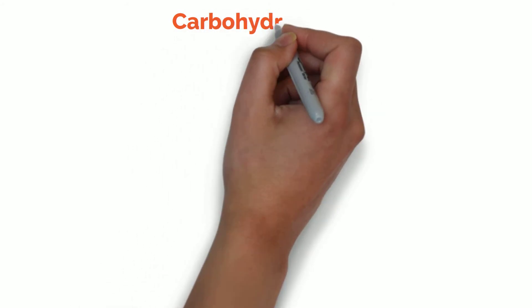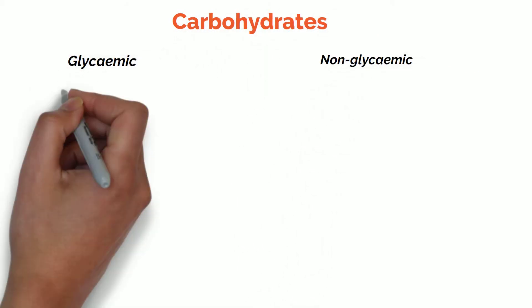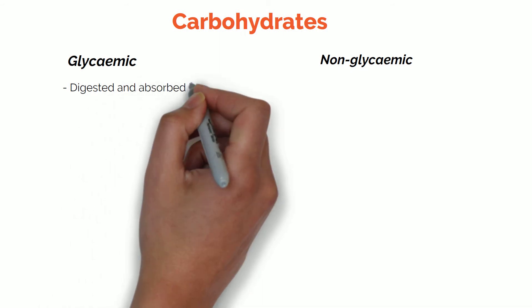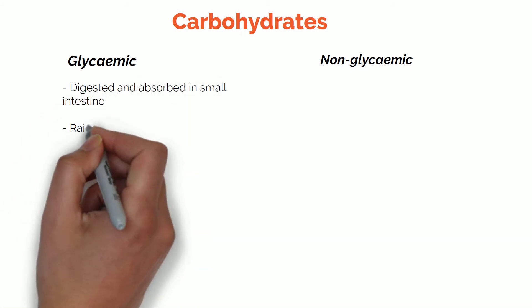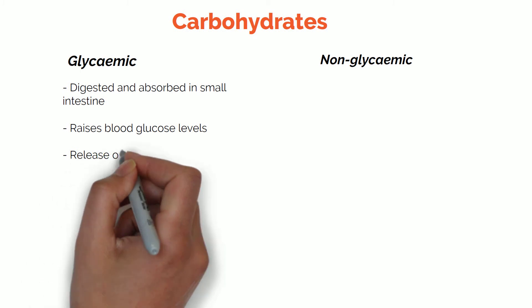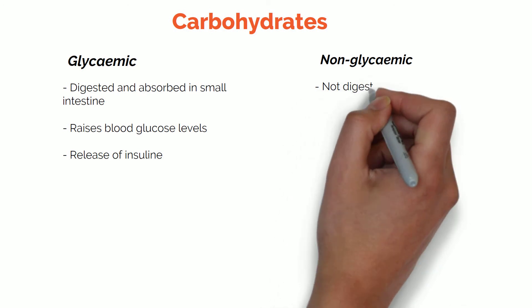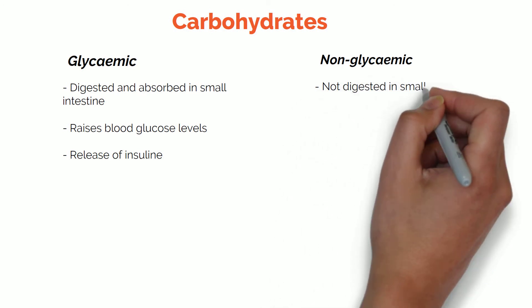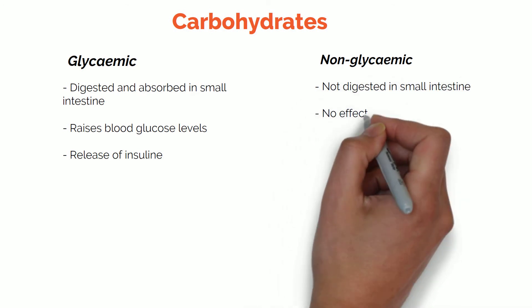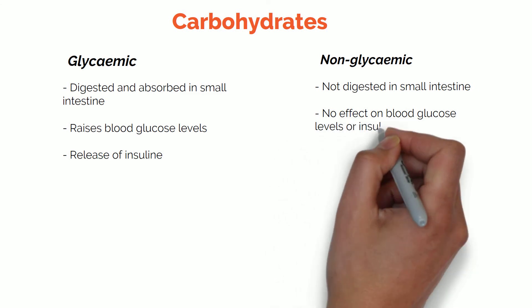Carbohydrates can either be glycemic or non-glycemic. The former can be digested and absorbed in the small intestine, which raises the blood glucose levels and therefore triggers the release of insulin to regulate the amount of glucose present in our blood. The latter are not digested and absorbed in the small intestine and therefore don't have an impact on blood glucose levels, such as fibre.